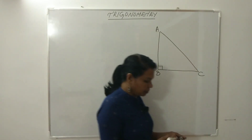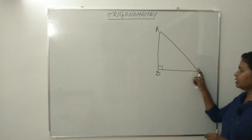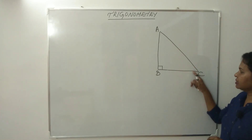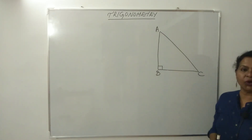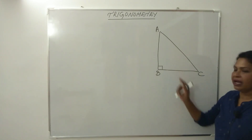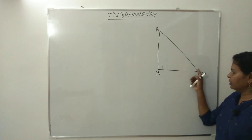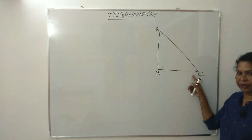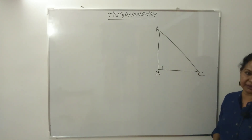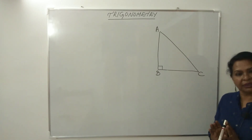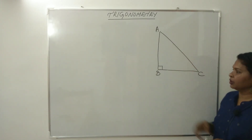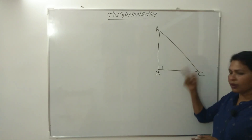If we consider angle C, then AB is the opposite side and BC is called the adjacent side. If we consider angle C, AB is the opposite side and BC is the adjacent side. AC is the hypotenuse — it is the longest side, opposite the 90-degree angle.